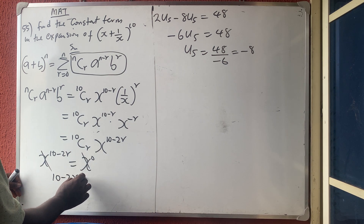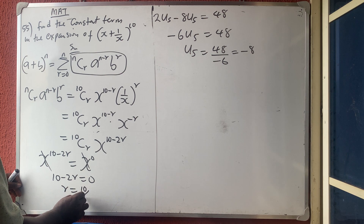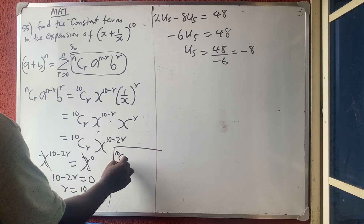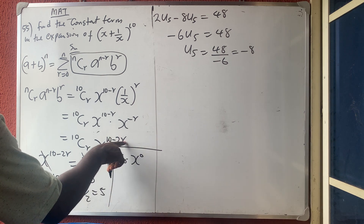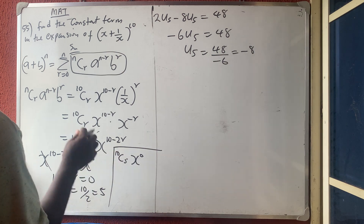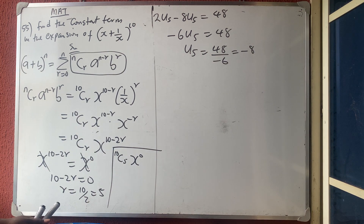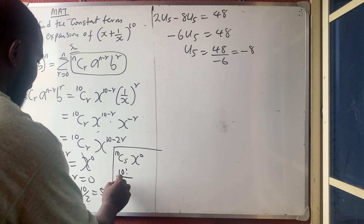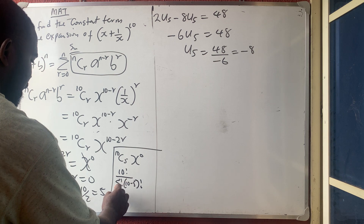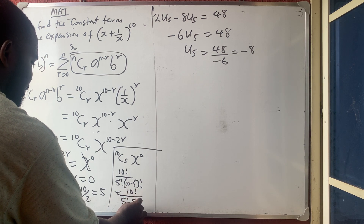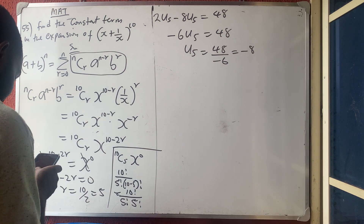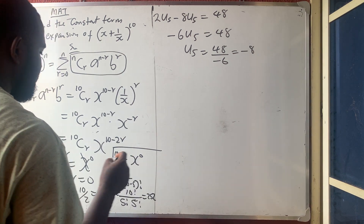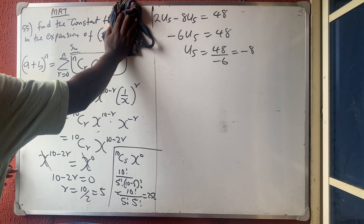Solving: r = 10 divided by 2, so r = 5. Substituting back, the constant term is 10C5 times x^0, which is just 10C5. Now 10C5 = 10! over (5! times 5!), and computing this gives 252. So the constant term is 252.